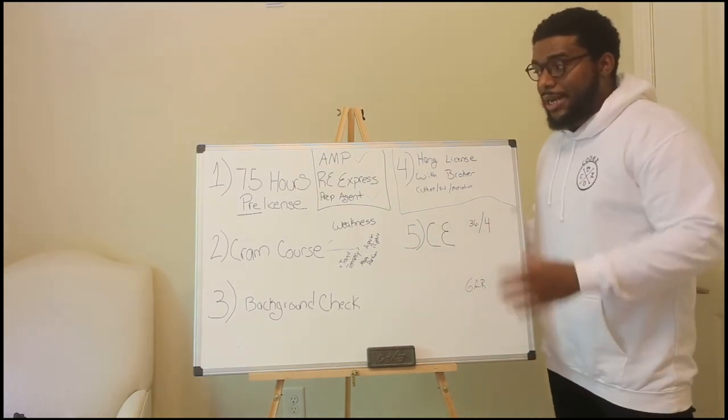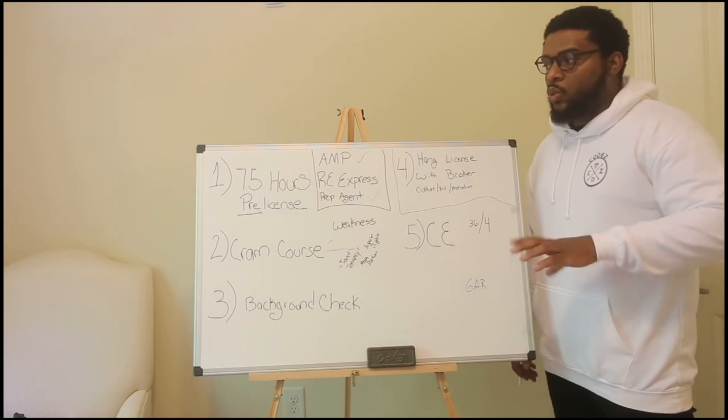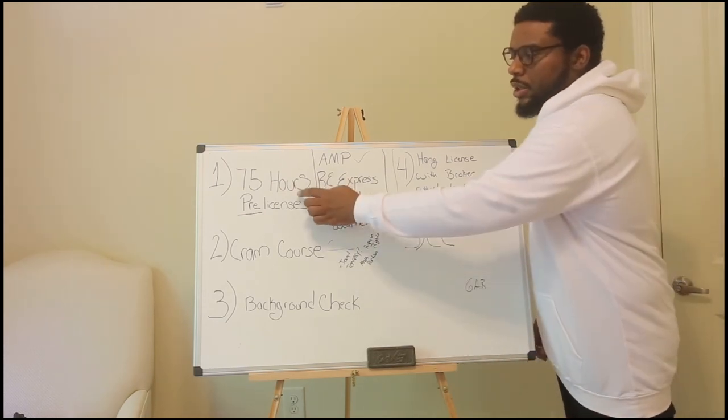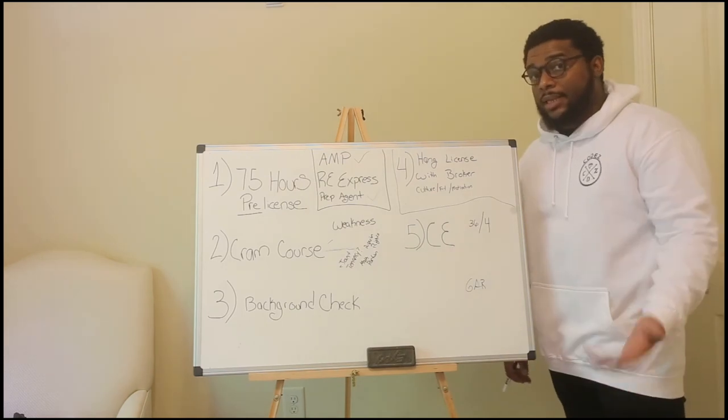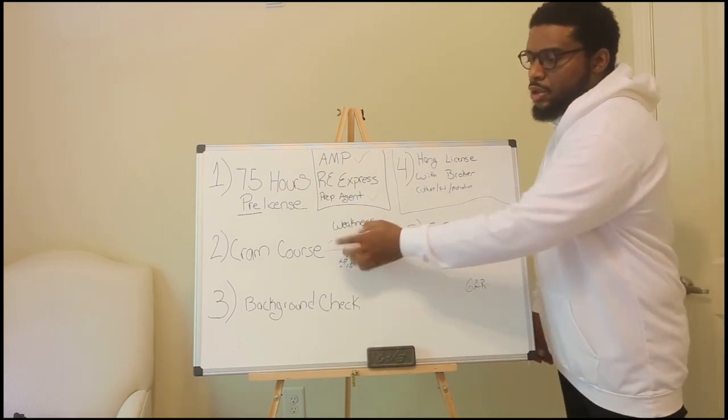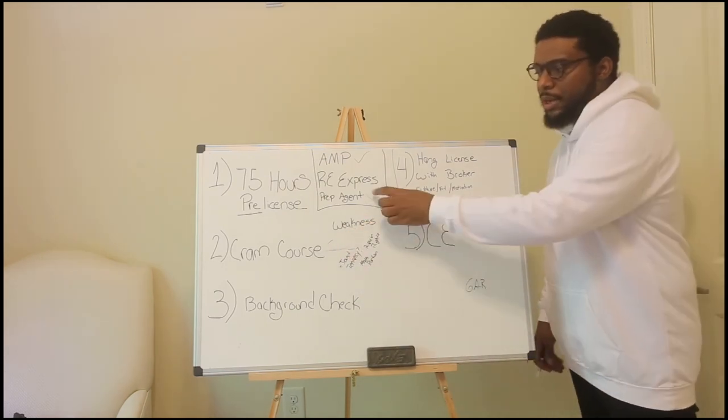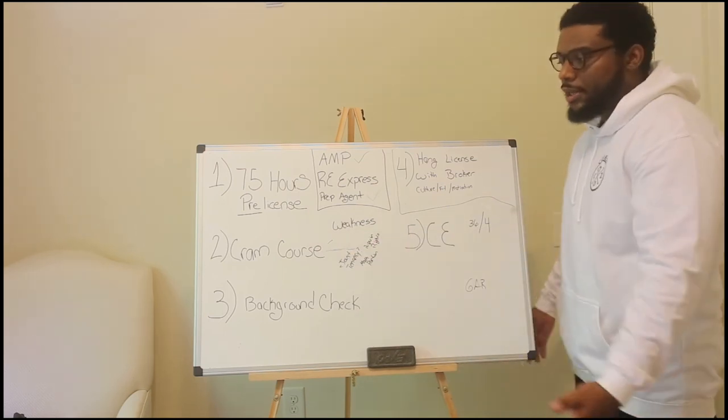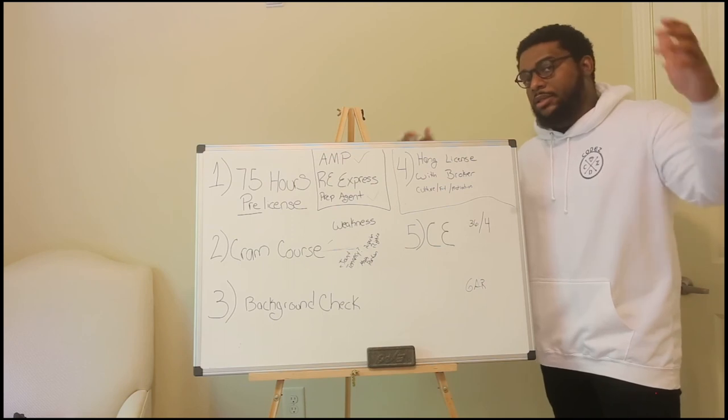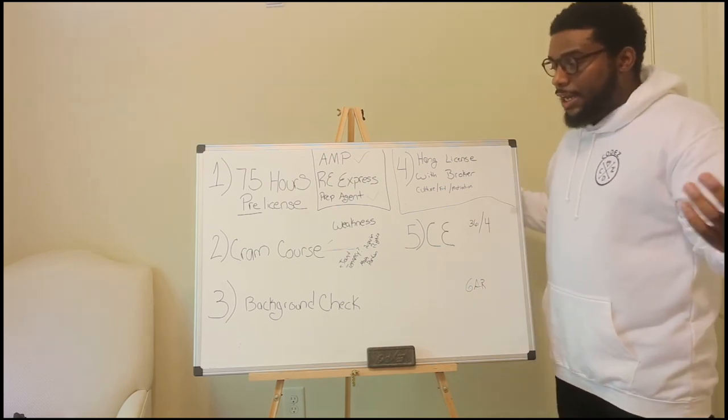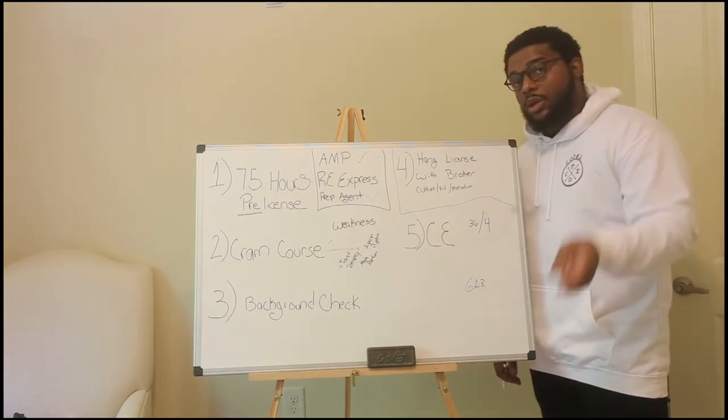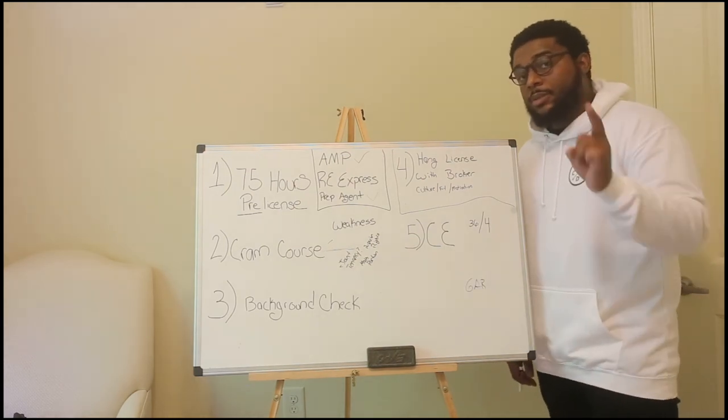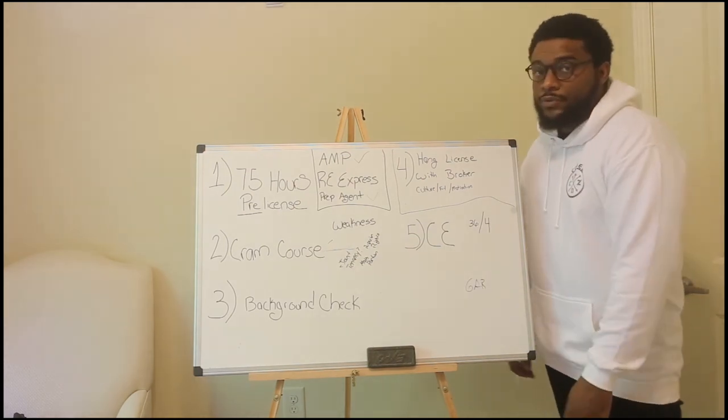If you're really serious about this, you can take all of this and knock it out probably within one to maybe two months. It may take you about two to four weeks to take care of your pre-licensed class. It may take you another two to three weeks in order to prep and take your cram and then take your exam. Then after that, you are a licensed agent. That's it. That's all I got for you. Let me know any questions or thoughts that you have down below. I'll make sure to answer that. If you haven't already, make sure to like and subscribe. I'm going to check you out in the next video. Peace.